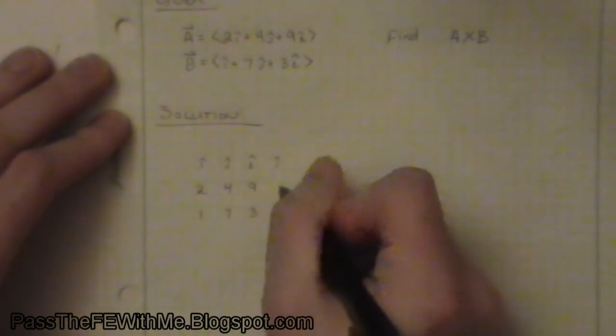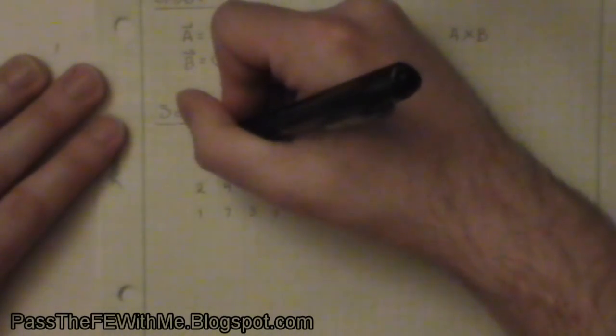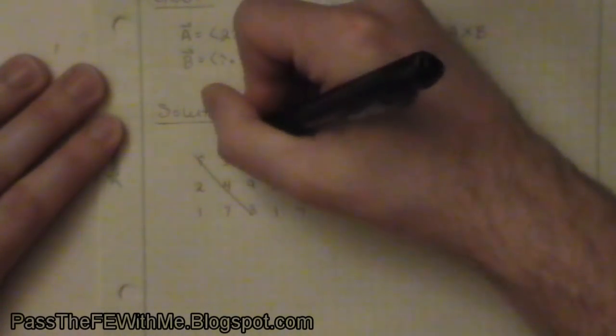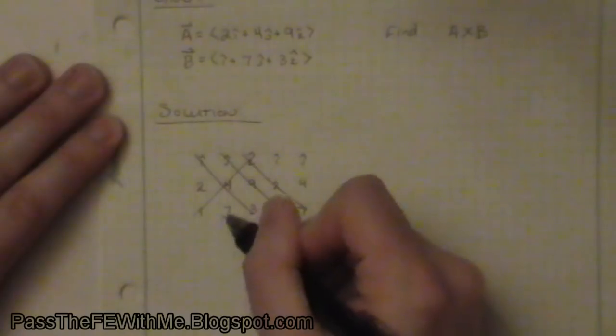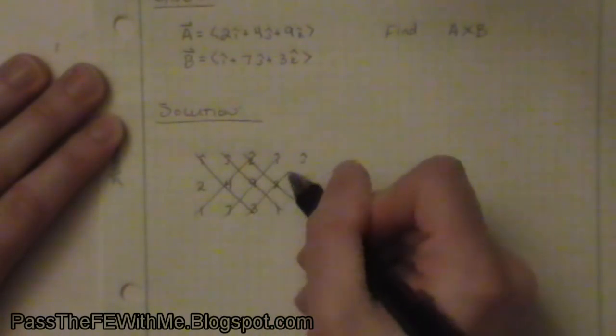And just like when we take the determinant of a 3 by 3 matrix, we're going to copy the first two columns again and trace the diagonal lines, just like we did with the 3 by 3 determinant.